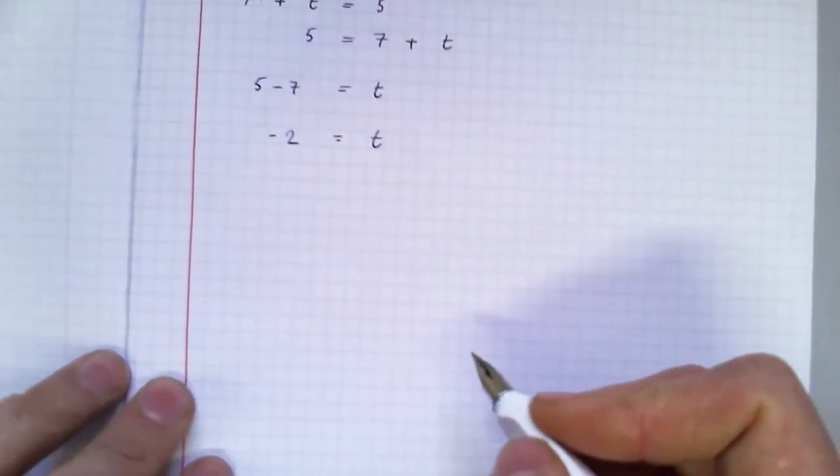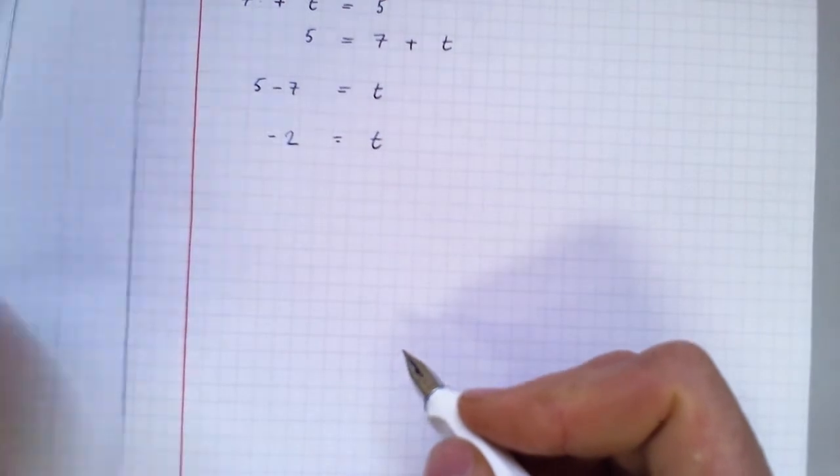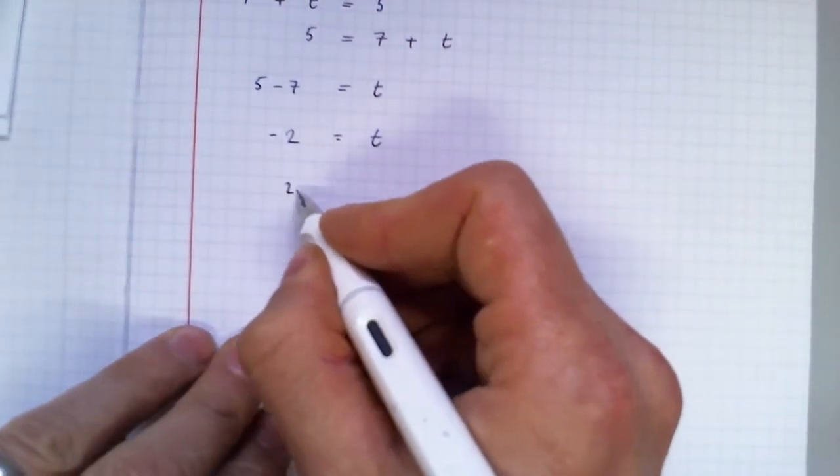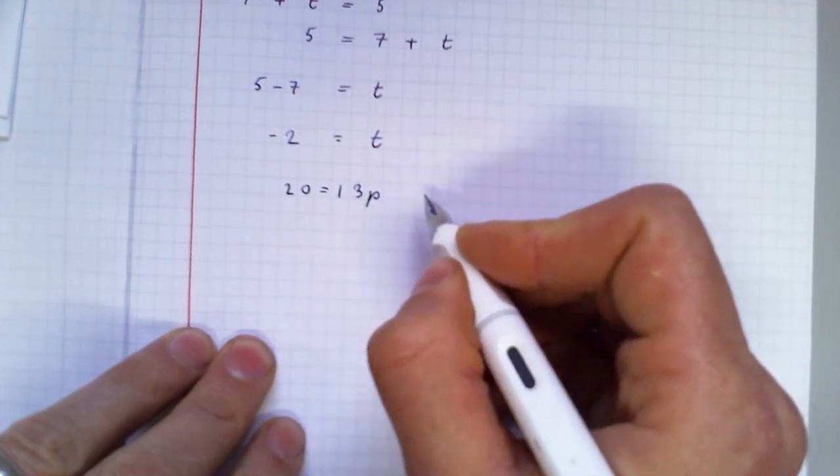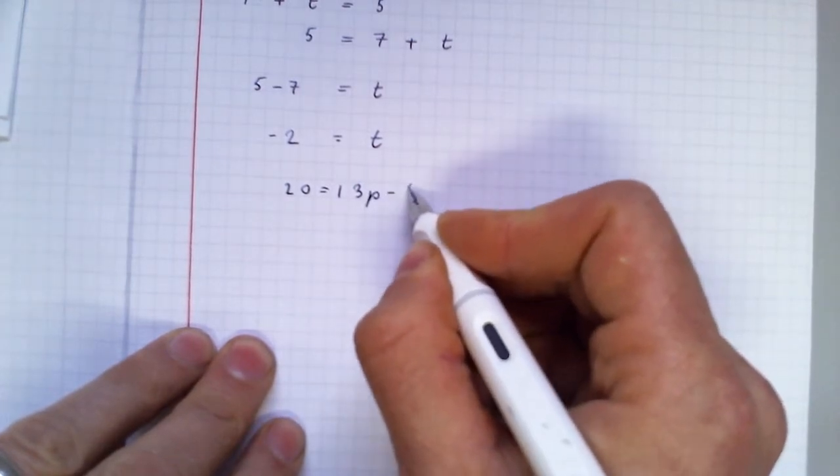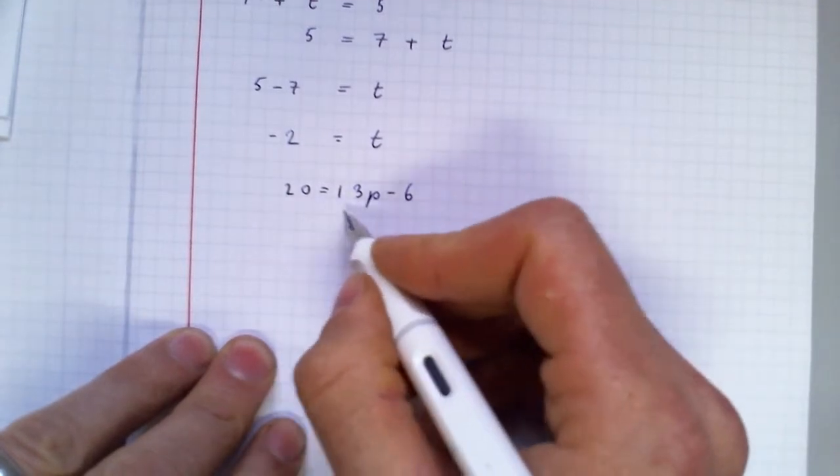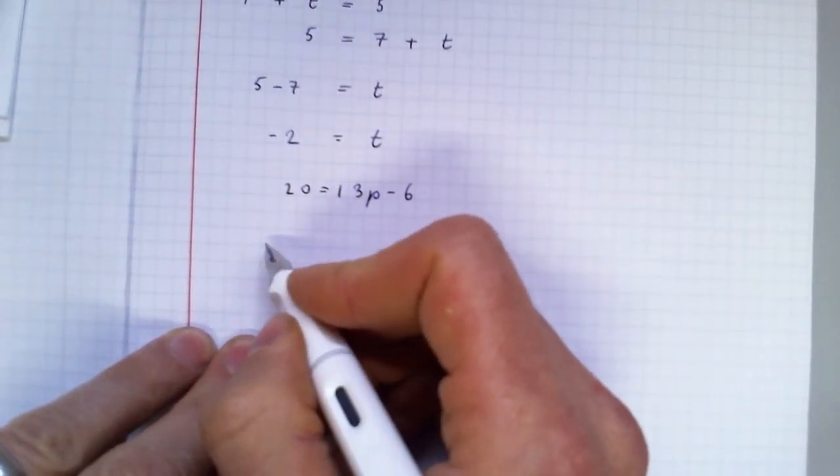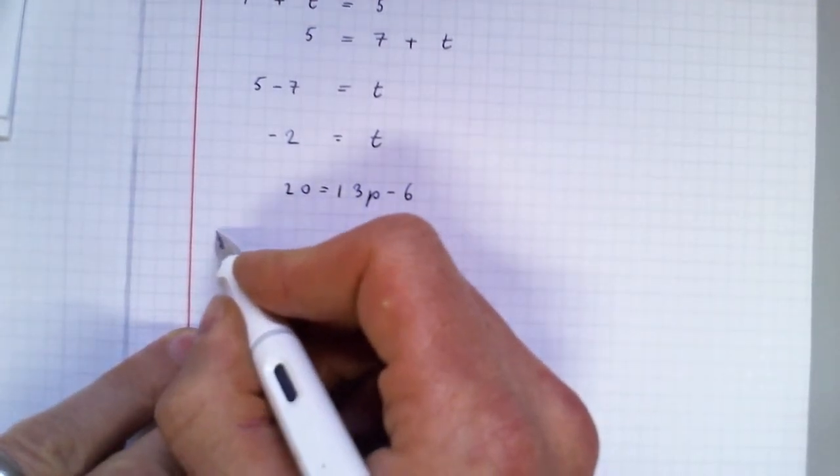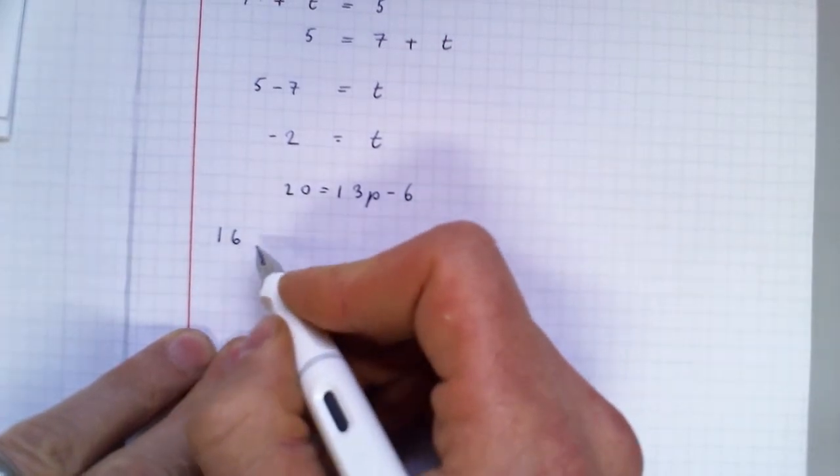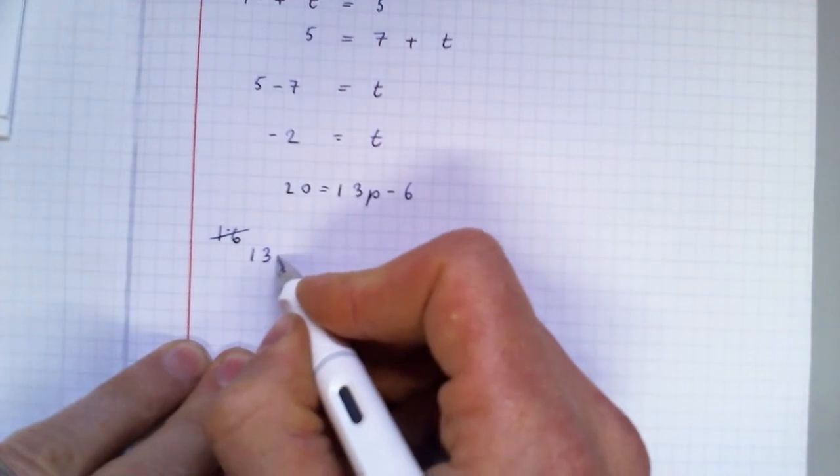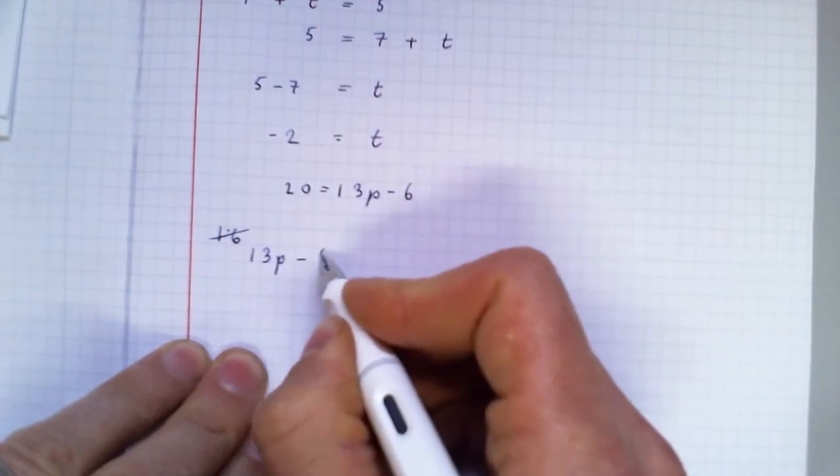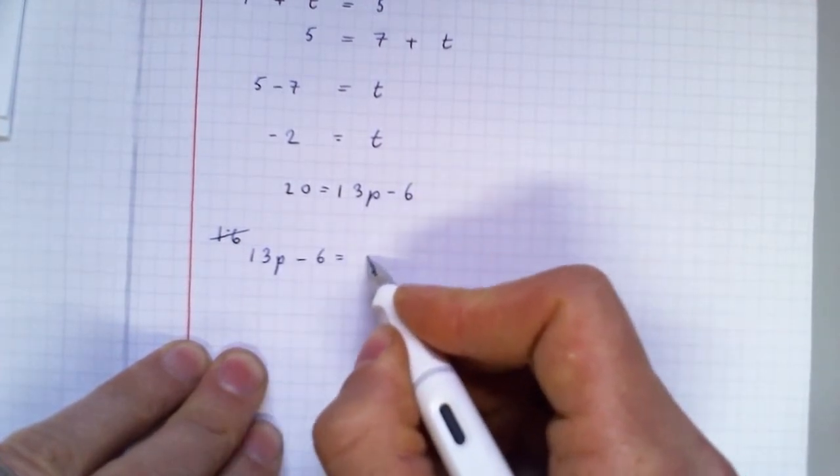OK, let's try a slightly more complicated one to finish with. A combination. 20 equals 13p take away 6. So I don't like the letter on the right. I want the letter on the left. So here I go. I'm going to swap it over. 13p take away 6 equals 20.